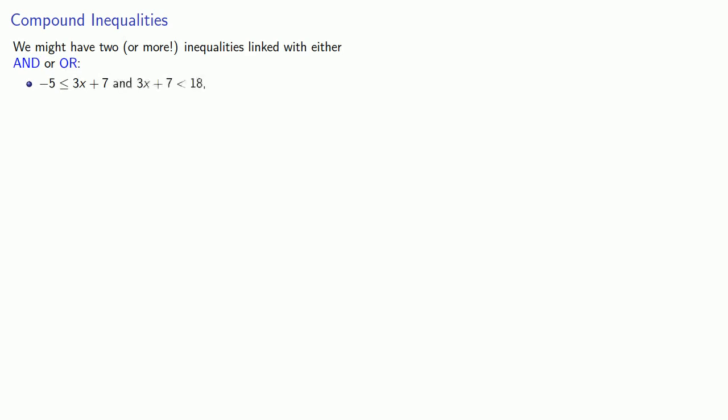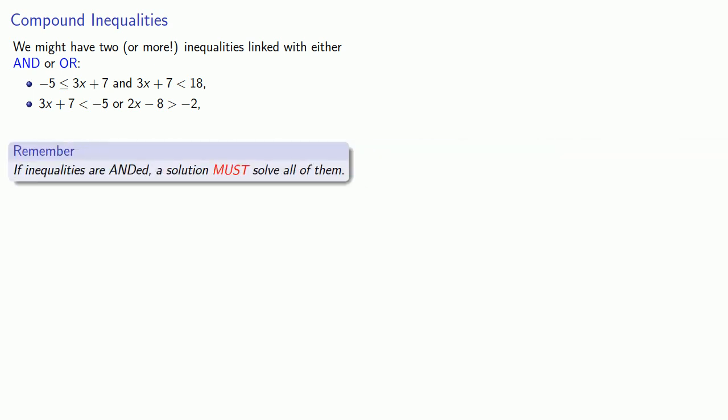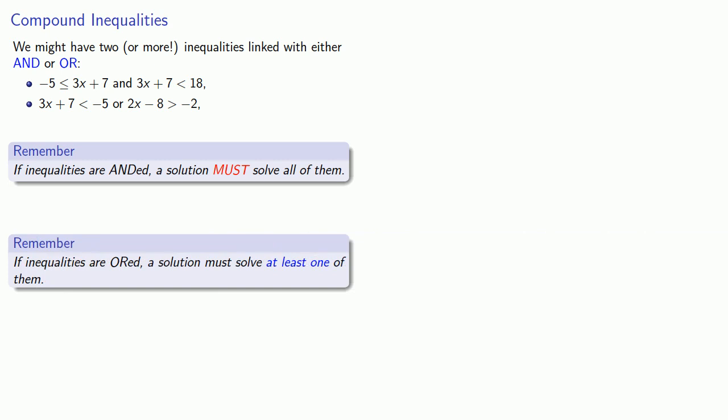For example, negative 5 less than or equal to 3x plus 7 and 3x plus 7 less than 18. Another type of compound inequality involves OR: 3x plus 7 less than negative 5 or 2x minus 8 greater than negative 2. The important things to remember: if inequalities are ANDed, a solution must solve all of them. If inequalities are ORed, a solution must solve at least one of them.